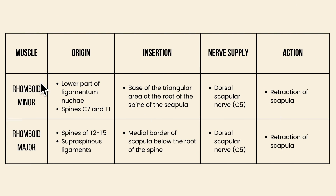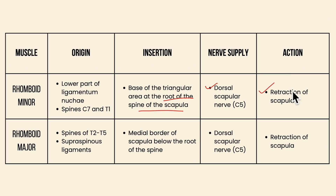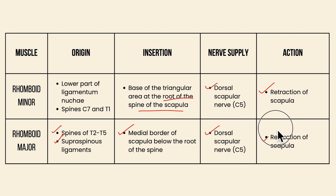To concise the points of the rhomboid minor and rhomboid major: the rhomboid minor originates from the lower part of the ligamentum nuchae and the spines of C7 and T1; it inserts onto the base of the triangular area at the root of the spine of the scapula; its nerve supply is the dorsal scapular nerve and its action is retraction of the scapula. The rhomboid major originates from the spines of T2 to T5 thoracic vertebrae and the supraspinous ligaments; it inserts onto the medial border of the scapula below the root of the spine; its nerve supply is the dorsal scapular nerve and its action is retraction of the scapula.